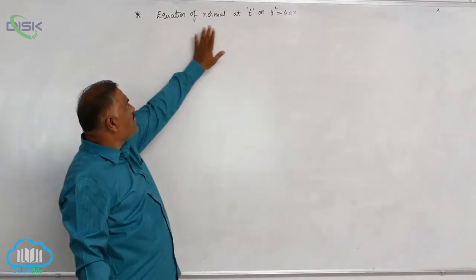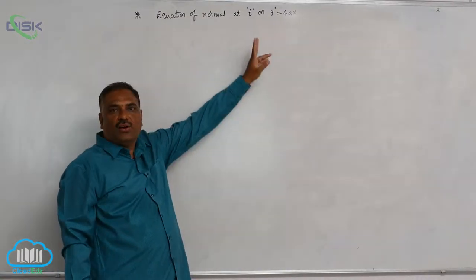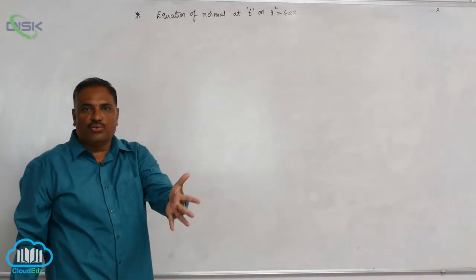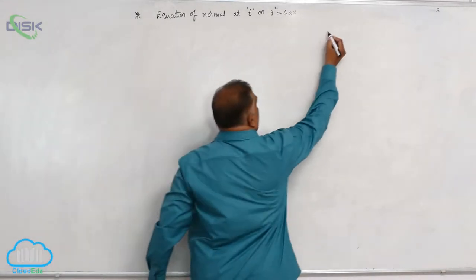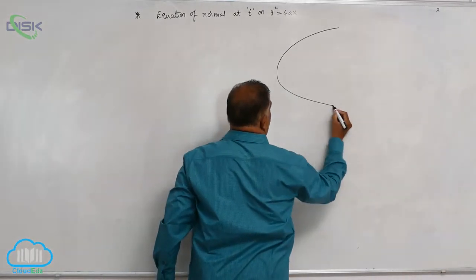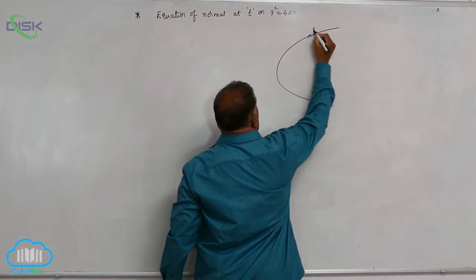We will discuss the equation of normal at any point t on the parabola y square equal to 4ax. As usual, we can take the parabola like this, any point P t here.